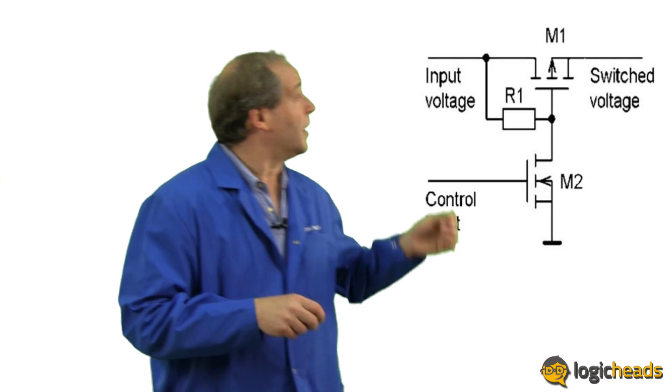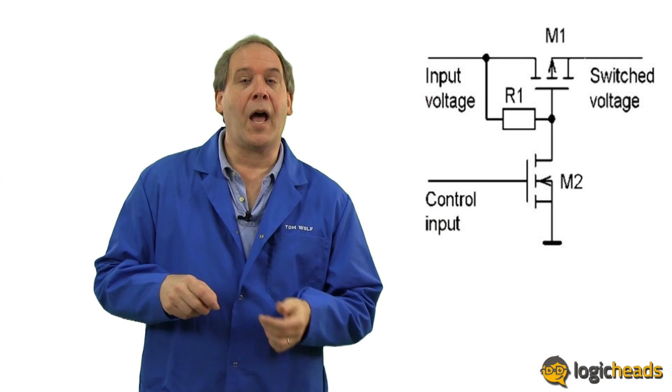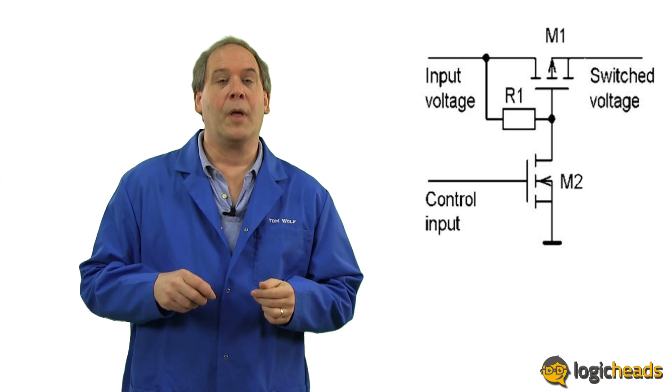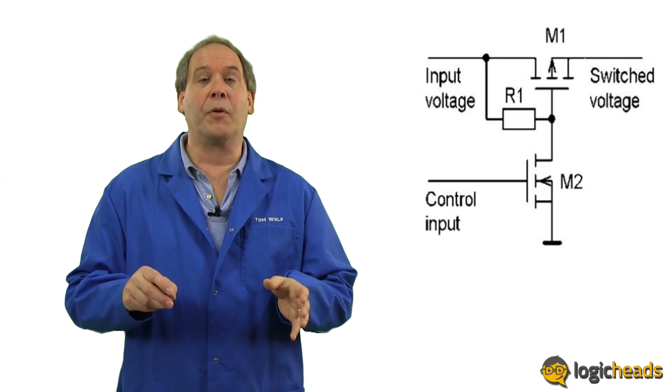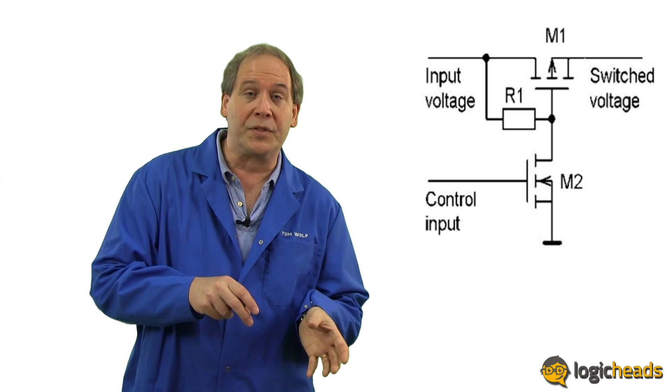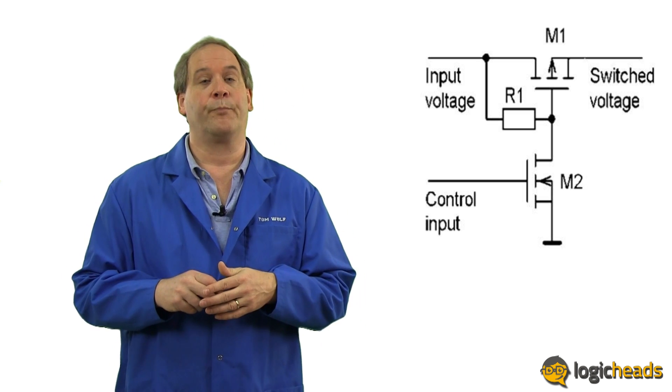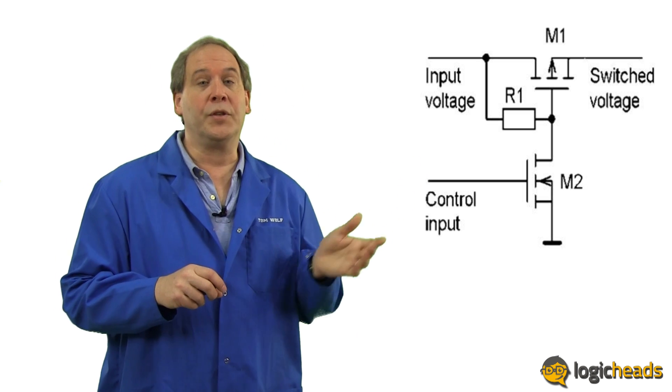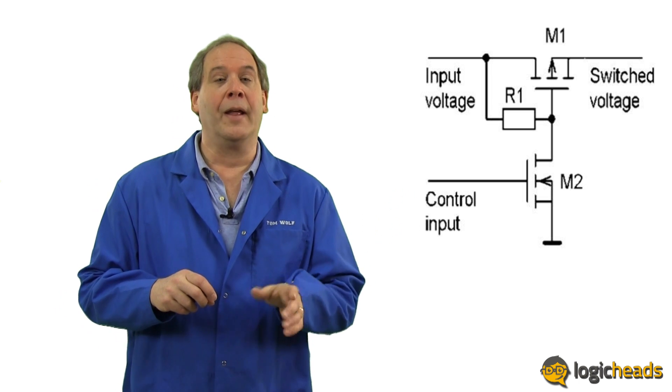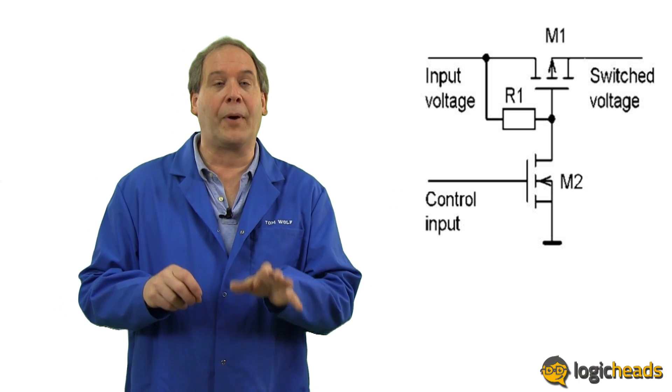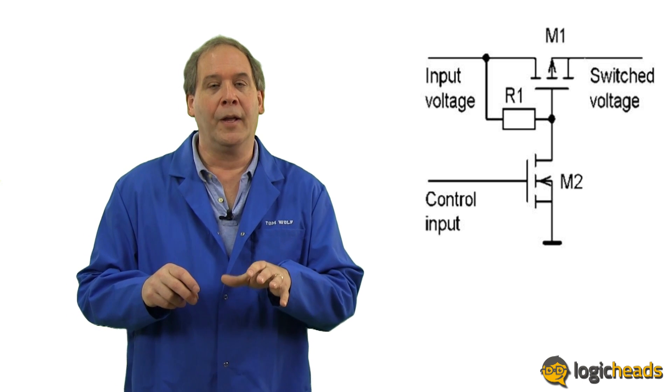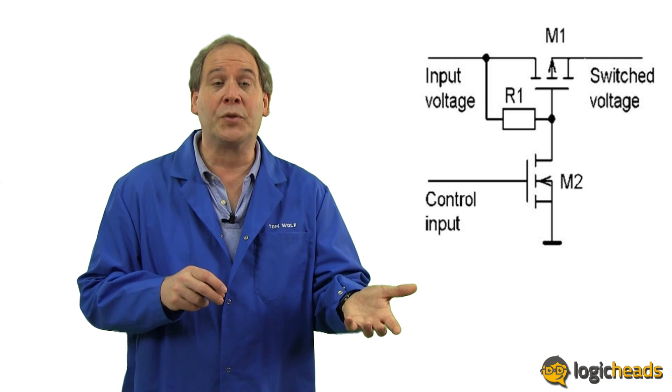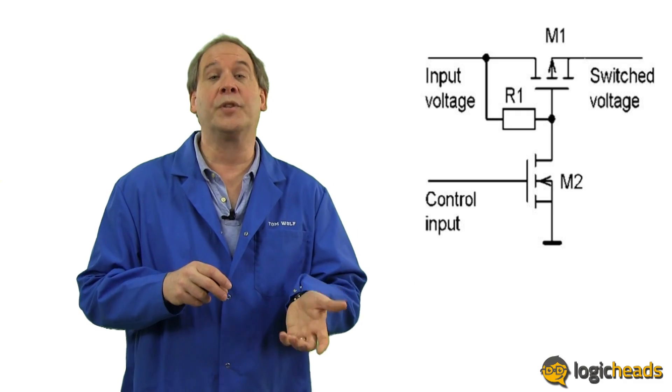Now this is the diagram of the inside of the simplest type of load switch. The FET M1 is the workhorse. It controls the main power through the load switch from the input voltage side to the switch voltage side. The resistor R1 is used to bias the gate of the FET. This means pre-applying the proper amount of voltage to the gate so it's right on the edge of turning on. Just a little bit more voltage from the control input line and the load switch will turn on.